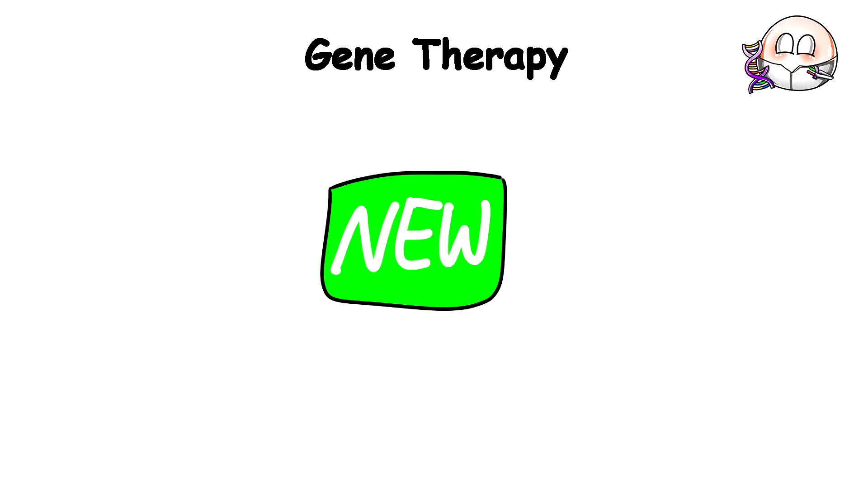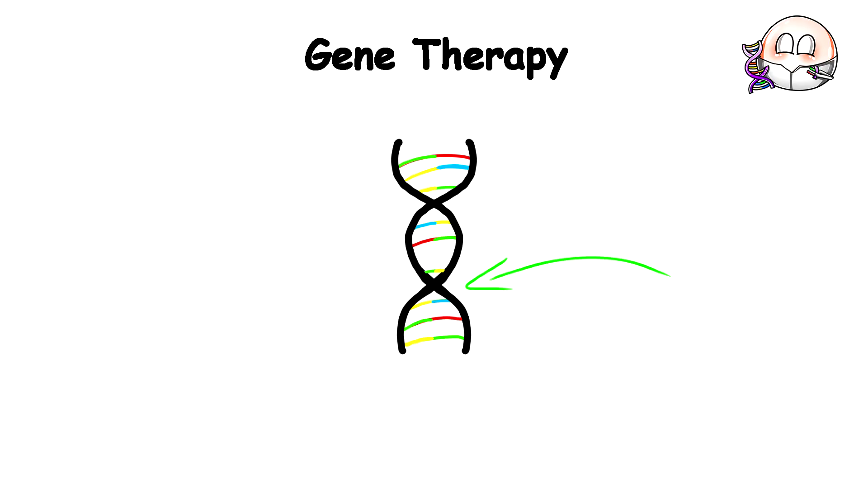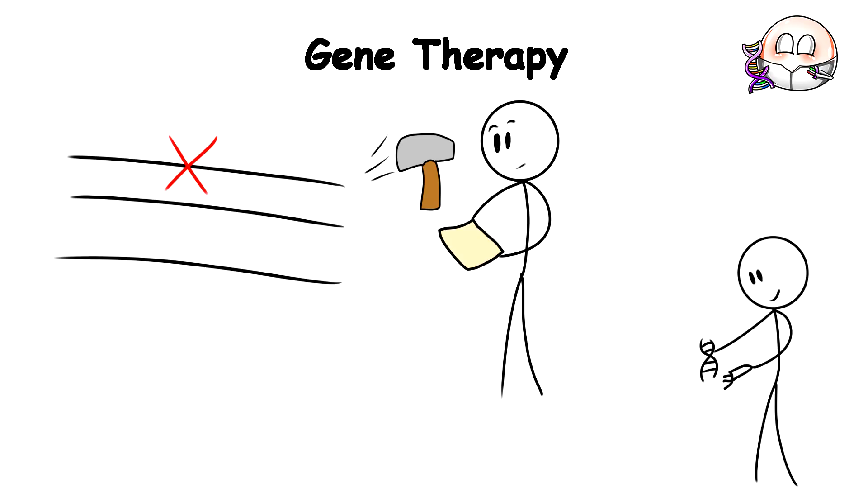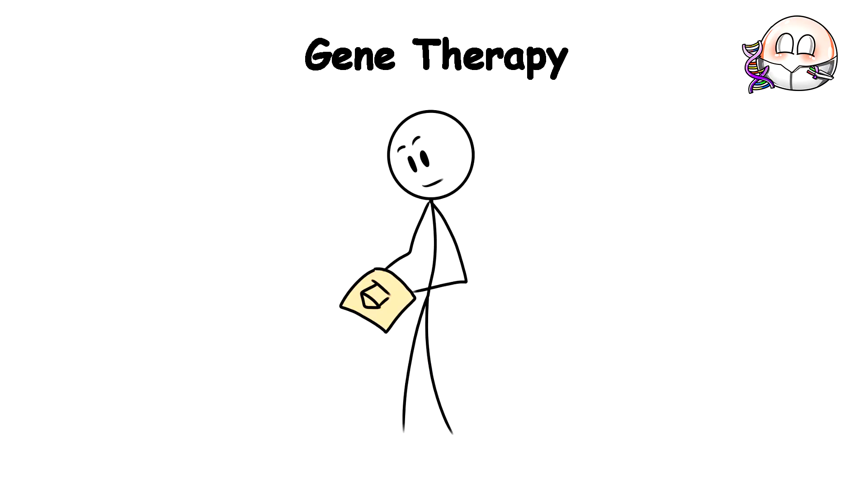Then, a new therapy arrived that could rewrite those wrong instructions. Gene Therapy is like going into the body's original architectural plans, finding the lines with errors that specify building something ineffective or dysfunctional, and editing them with the correct details instead. It's like catching a design flaw early before countless defective products get manufactured.